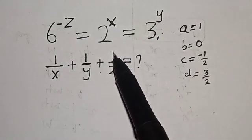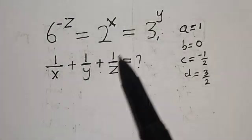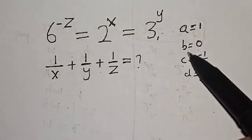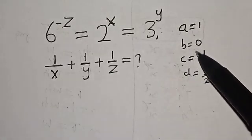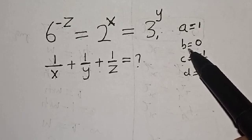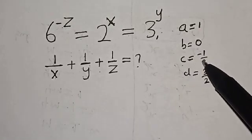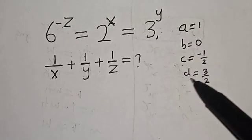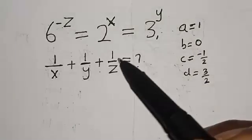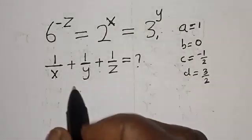Before we proceed, please don't forget to like, share, comment and subscribe. Here are the options: A is equal to 1, B is equal to 0, C is equal to minus 1 over 2, and D is equal to 3 over 2. What do you think is the right answer? Let's go to the solution.